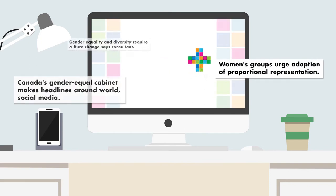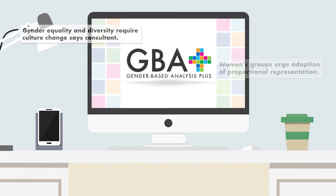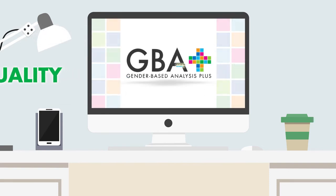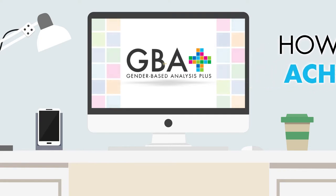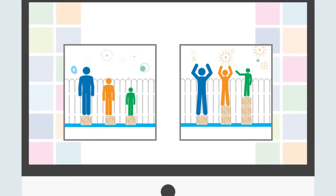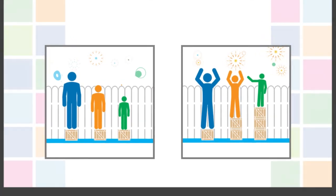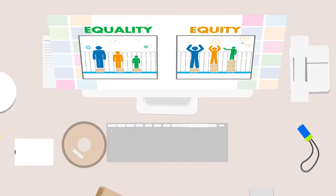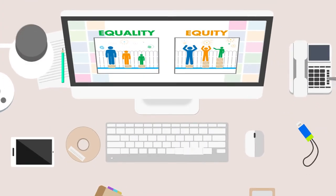There is a lot of buzz in Canada about gender equality. What does equality look like? How do we achieve it? Is it about treating everyone equally? Many of us have seen variations of this illustration. It compares equality and equity. These concepts are related, but not the same.